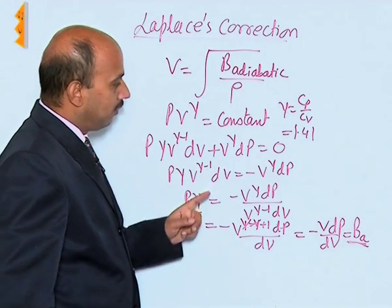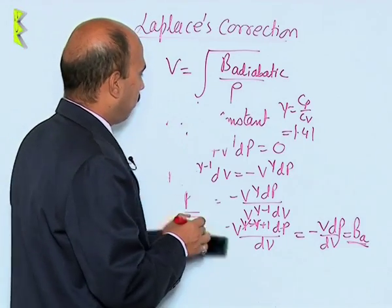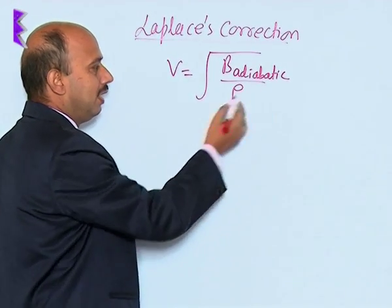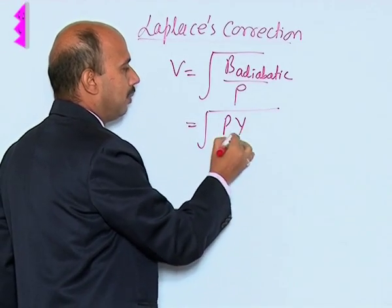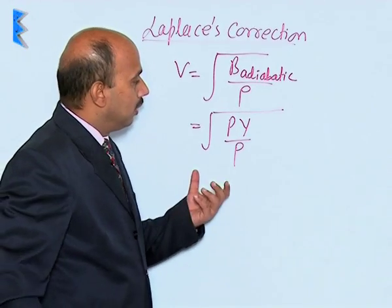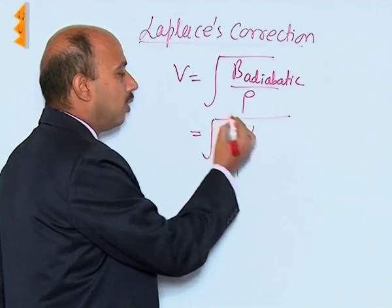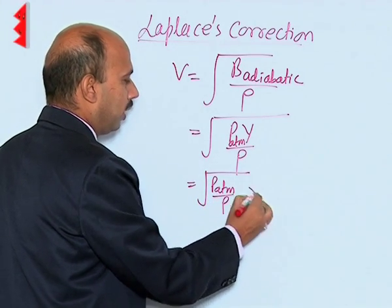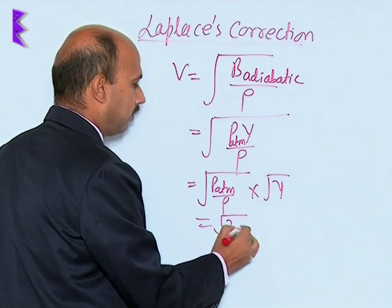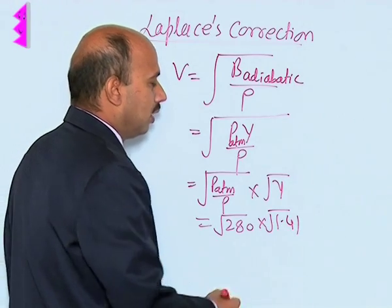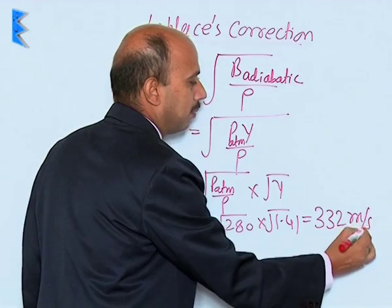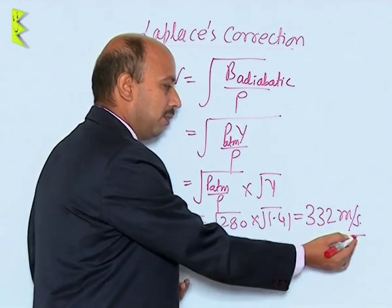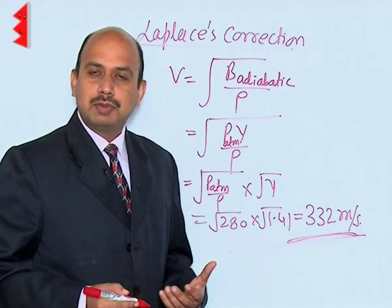Substituting B_A = Pγ into the formula, the speed of sound becomes √(Pγ/ρ). Here P is atmospheric pressure and γ = 1.41. We already calculated √(P_atm/ρ) = 280 m/s, so multiplying by √1.41 gives √(280² × 1.41) ≈ 332 meter per second. When the speed of sound is calculated using Laplace's assumption, the result is nearly equal to the experimental value of the speed of sound in air.